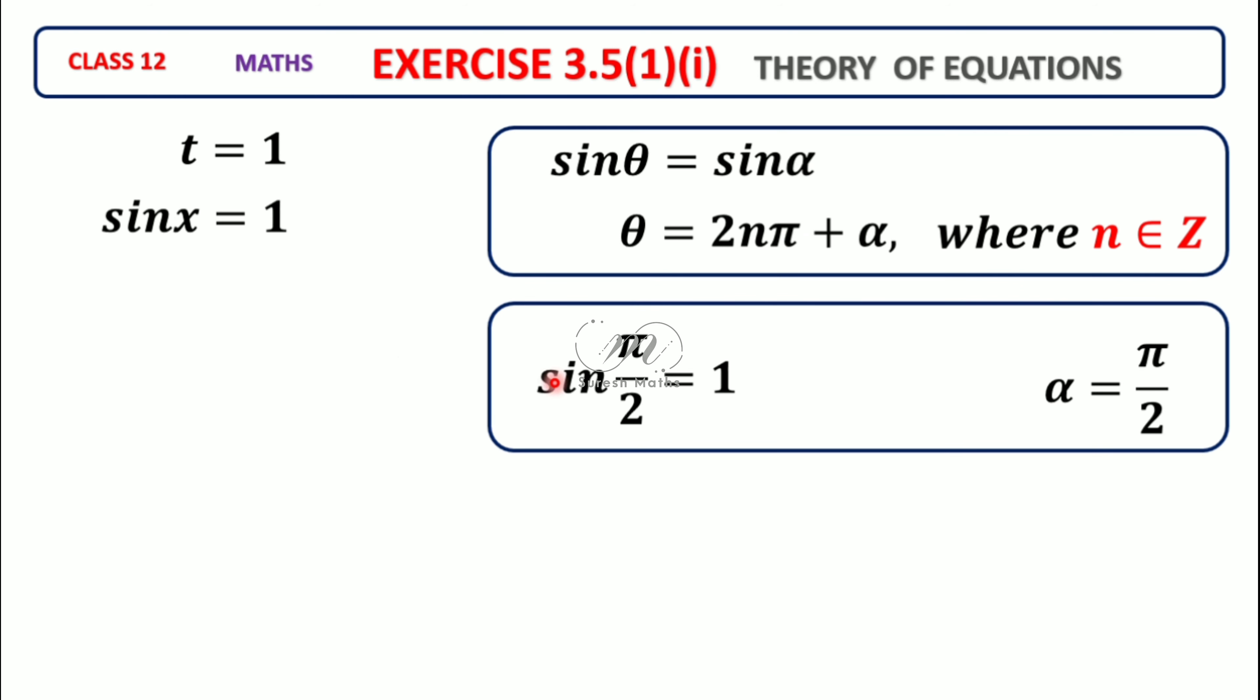sinx = 1 converts using the sinθ = sinα formula. Since sin(π/2) = 1, we have sinx = sin(π/2). Therefore x = 2nπ + π/2, where n can be any integer like 0, 1, etc. That's the solution.